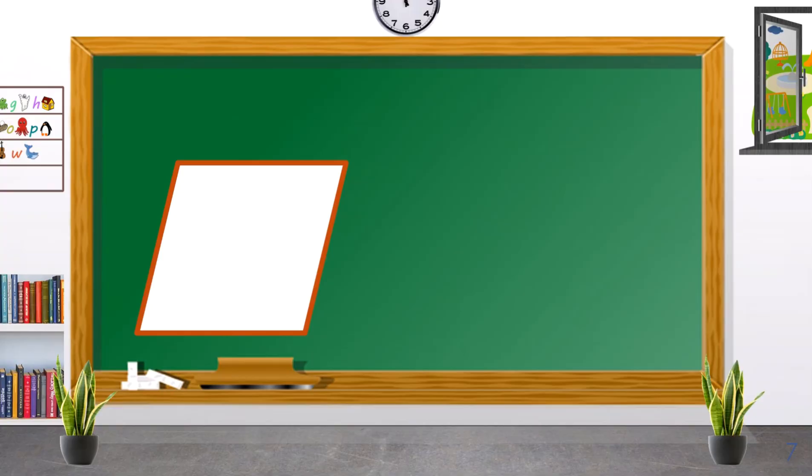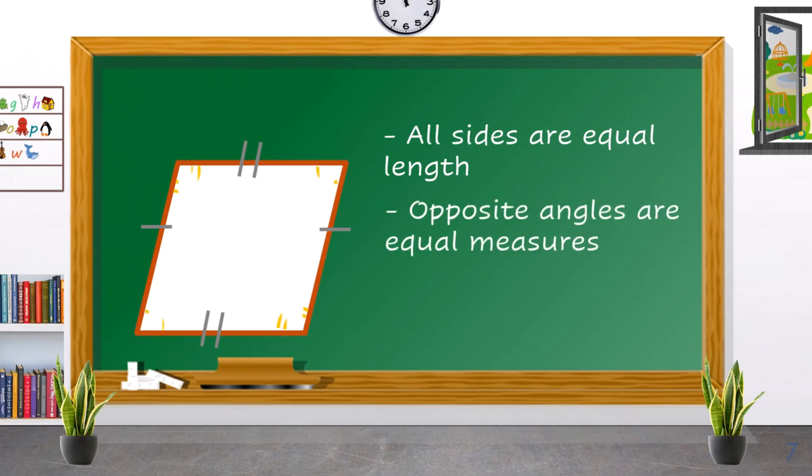And the last type of quadrilateral: all sides are equal, opposite angles are equal measures, and the opposite sides are parallel. This is a rhombus.